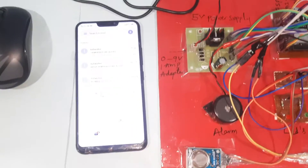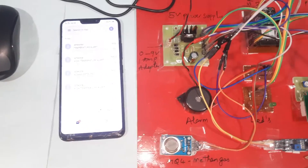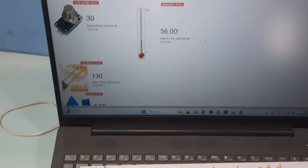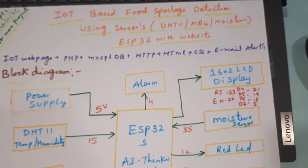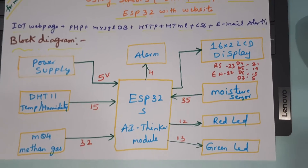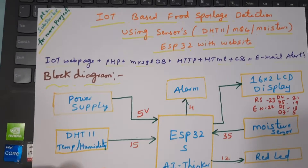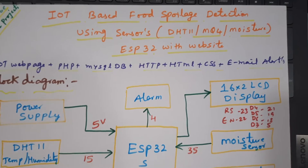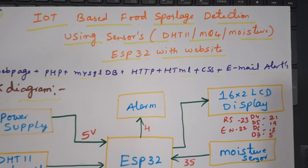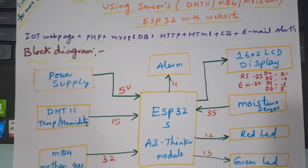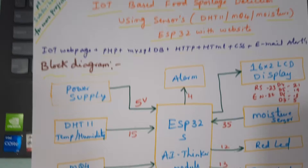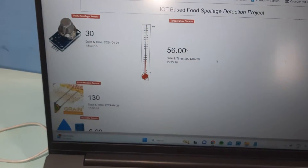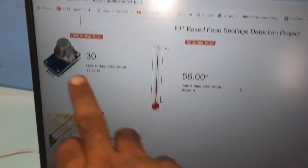We are from SVSM Baden. The project title is IoT-Based Food Spoilage Detection System using ESP32 AI Thinker module. Food spoilage detection uses DHT11 temperature and humidity sensor, MQ4 methane gas sensor, and moisture sensor with ESP32, and we are sending the data to a website.